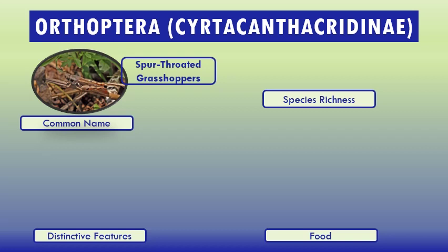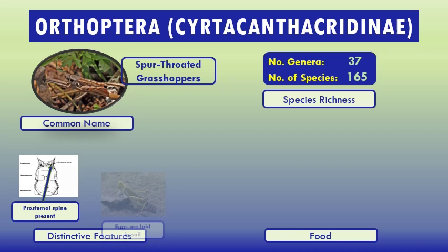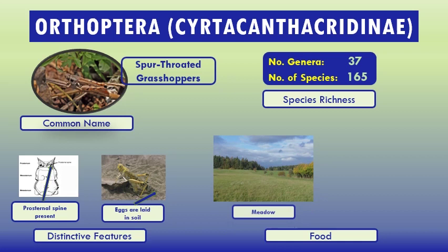Dietary habits also vary, but generally these insects are polyphagous. This group contains many important pests. Many of the grasshoppers are called locusts because of the swarming behavior found in this group. These grasshoppers are found throughout the world. Species richness: number of genera 37, species 165. Distinctive features: prosternal spine present, eggs are laid in soil. Food: feed on all types of crops.